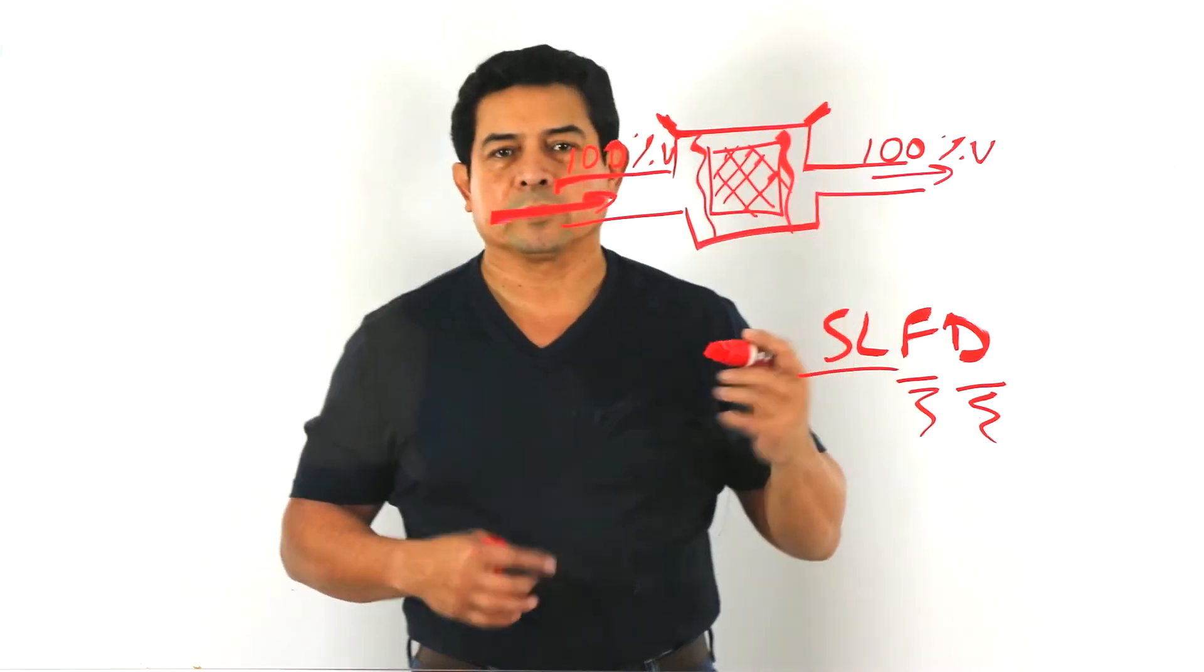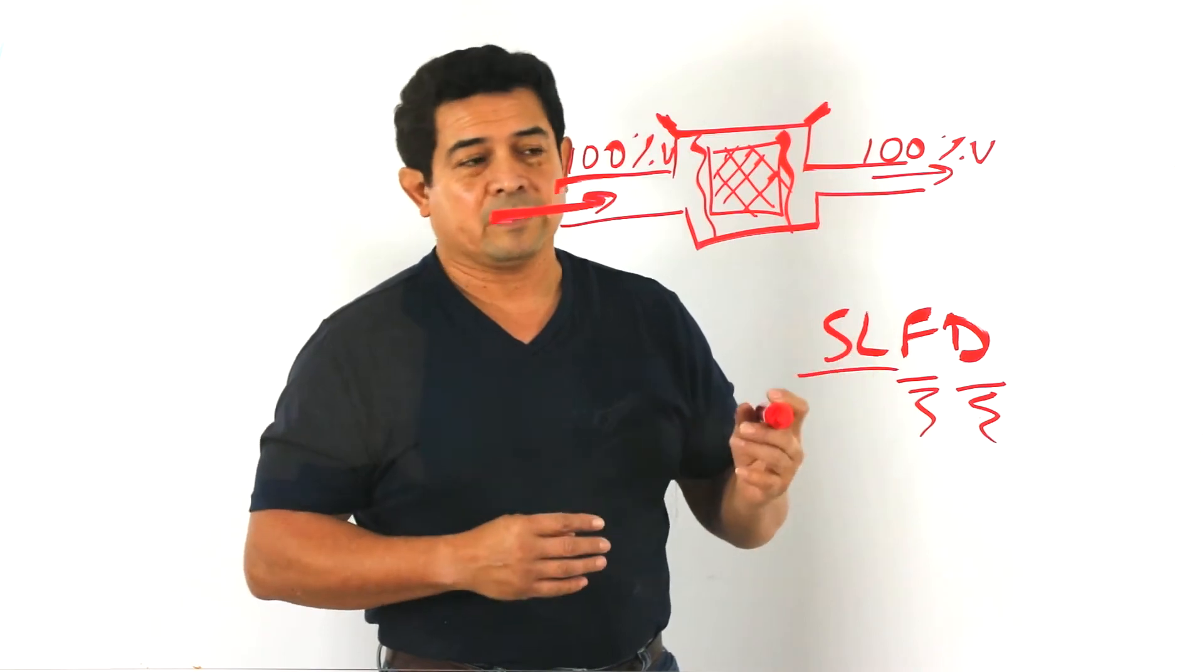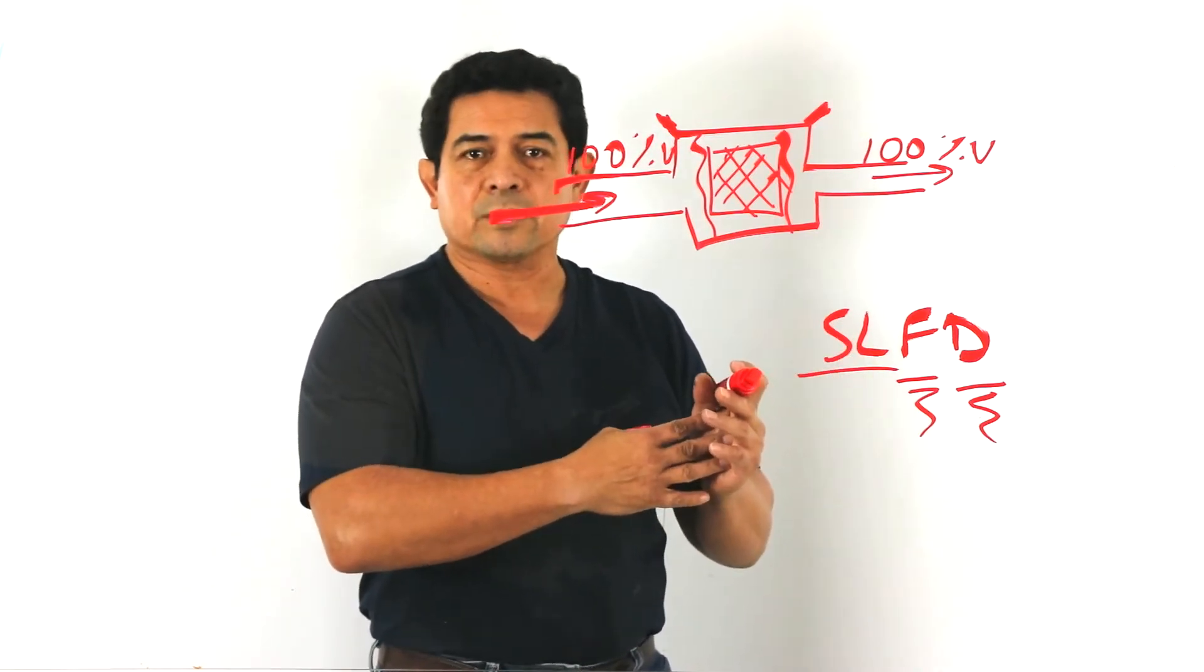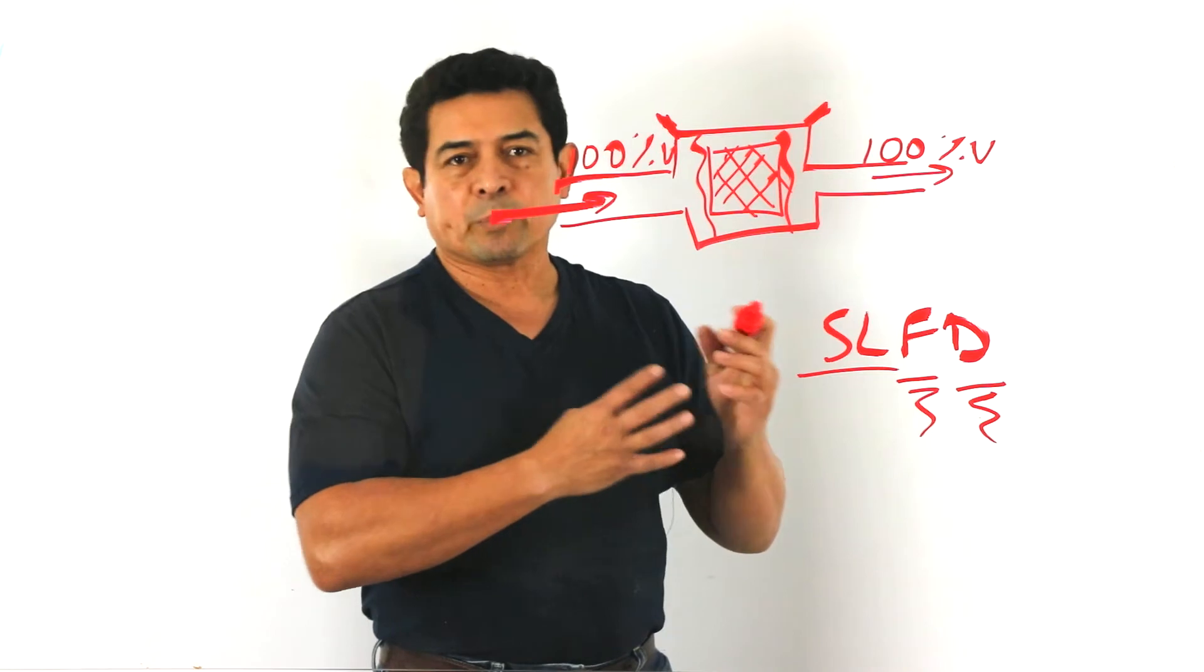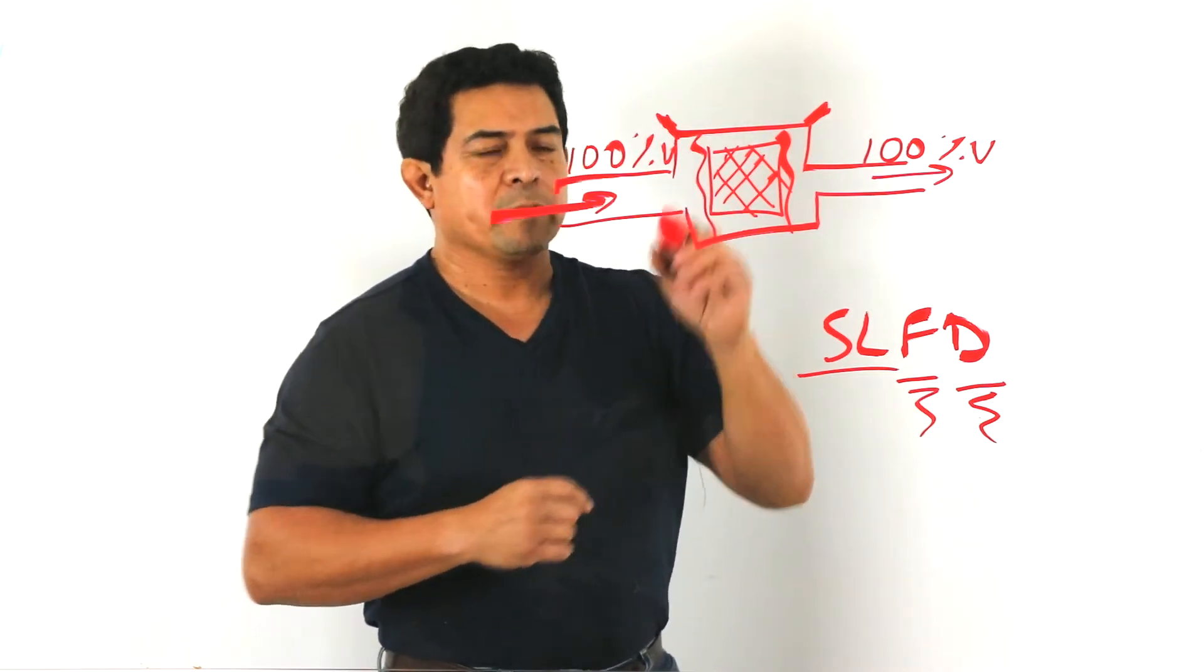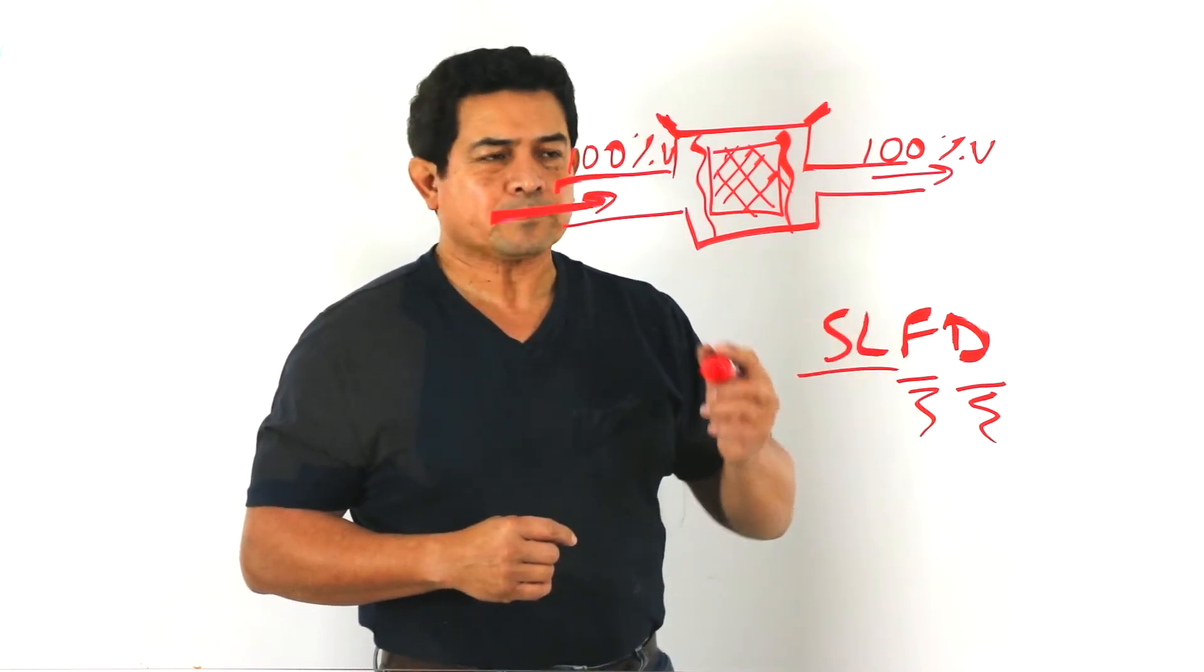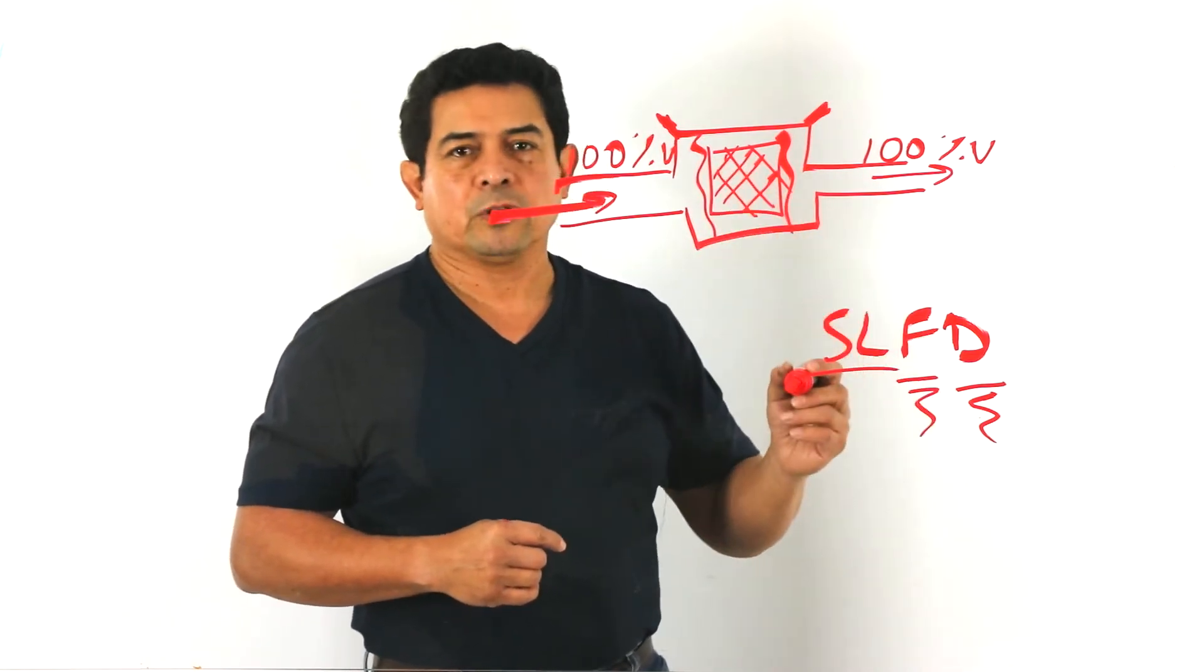Here we're going to filter, we're going to trap all the trash that's in the system. Because like it or not, we get stuff in the system when we install it, when we do the installation or when we replace a part. So we want to make sure they don't get to the compressor or the metering device. That's why we need to filter what's in there.